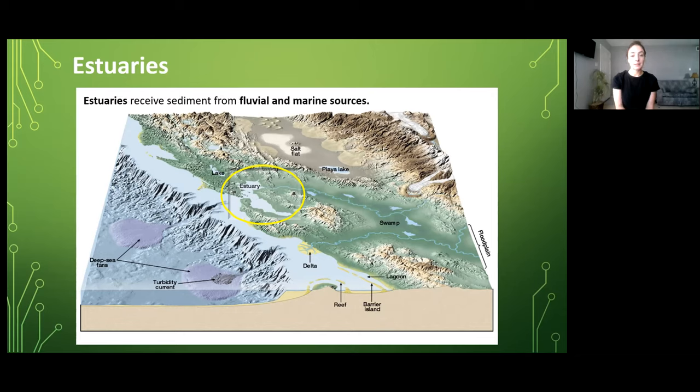Estuaries receive sediment from both fluvial and marine sources and therefore this is going to be a large part of the discussion when we go over what kind of deposition is going to occur and what kind of stratigraphy we might expect in an estuarine sequence.